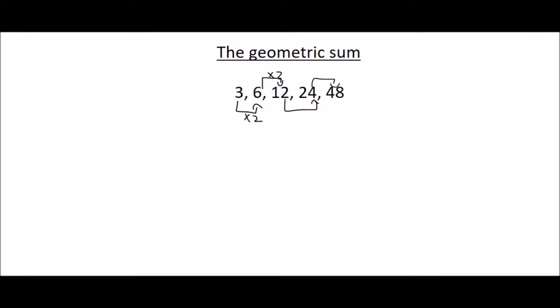So any type of sequence where you have to multiply by a particular number is called a geometric sequence. But then if we change the sequence to look like this then we could think of it as a geometric sum which means you would want to add everything together.